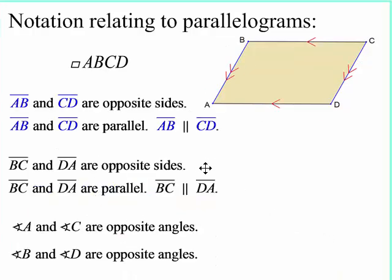Okay, more notation. AB and CD are opposite sides of the parallelogram, and they're parallel. And BC and AD, those are opposite sides of the parallelogram, and they are parallel to each other.